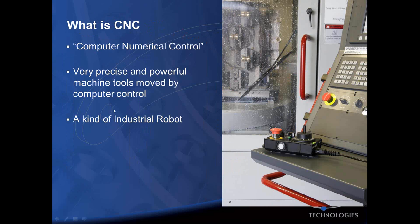So what is CNC? It stands for computer numerical control. It's very precise and powerful machinery. It runs off of G-code. There's a constant flow of information, very precise tolerances, and it's easy to repeat jobs over and over again.